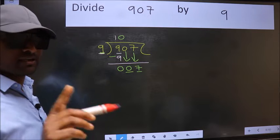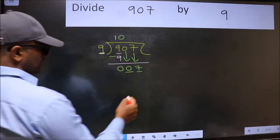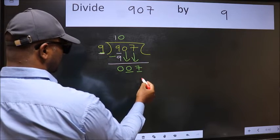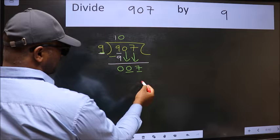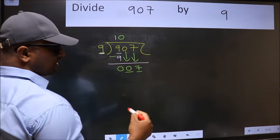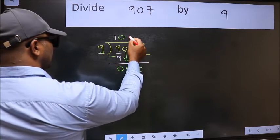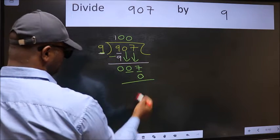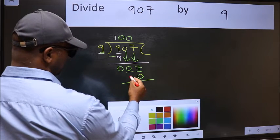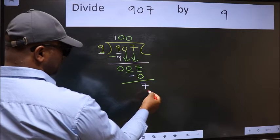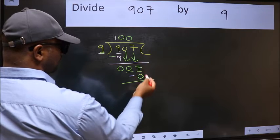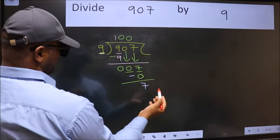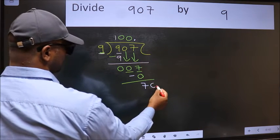Instead of that, what you should think of doing is: which number should we take here? If I take 1, we will get 9, but 9 is larger than 7. So what we should do is take 0. So 9 into 0 is 0. Now we should subtract, and we get 7. Over here, we did not bring any number down, and 7 is smaller than 9. So now we can put dot and take 0.